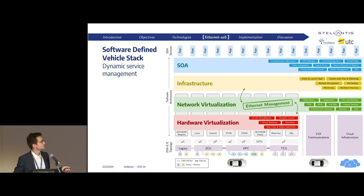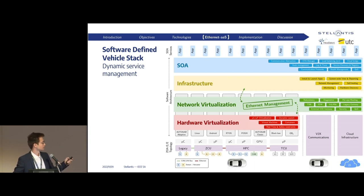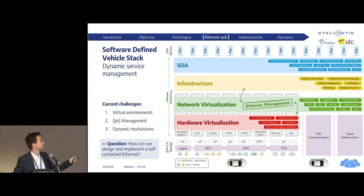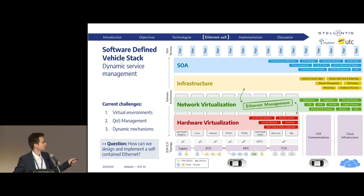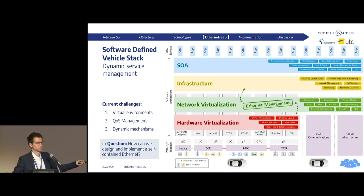Ethernet is of course in the network layer, and it's going to interact with both the infrastructure and the virtualization. This introduces challenges such as how to interact with virtual environments, how to respond to QoS changes requested by the infrastructure, and various dynamic mechanisms. The question is: how are we going to define this architecture to make it completely interchangeable relative to the rest of the architecture?